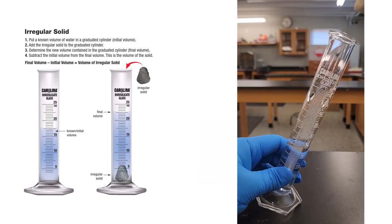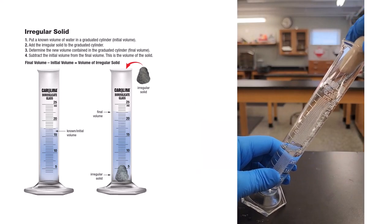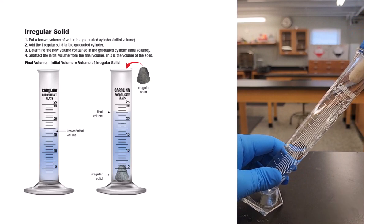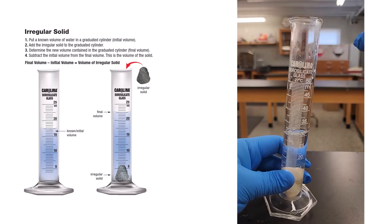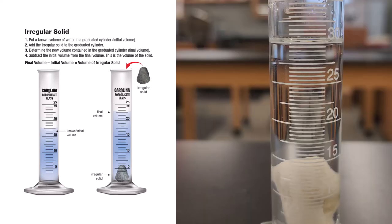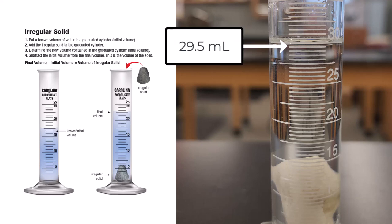Add your irregularly shaped solid to the graduated cylinder. In this example, it is a rock. Examine the water again at eye level. Read the numbered mark at the lowest point of the meniscus. In this example, the lowest point of the meniscus is at 29.5 mL. This is the final volume.